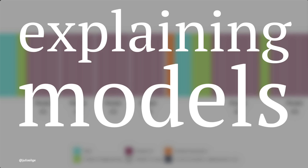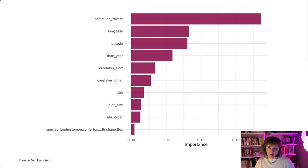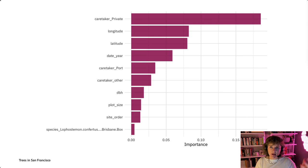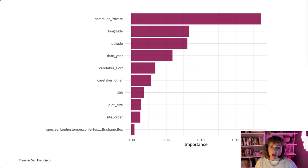I've so far focused on model evaluation plots that show us how models are performing in terms of metrics like RMSE or accuracy, but model evaluation activities can also encompass model explanations, and visualization is a key tool for explaining models as well. Model explanations fall into two main categories. The first are global explanations, where we evaluate what features are important in a model's predictions overall — aggregated for the whole model. This plot is from the San Francisco Trees example, and the length of the bars here corresponds to how important that feature is in predicting — using a random forest model — whether the tree is maintained by the Department of Public Works or not. Having a private caretaker is the most important, then spatial information, then the year the tree was planted, and so forth.